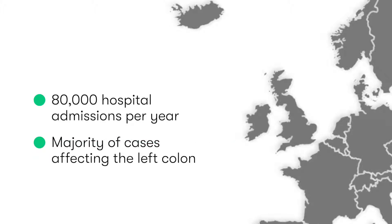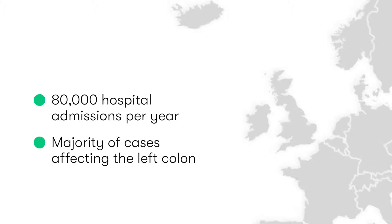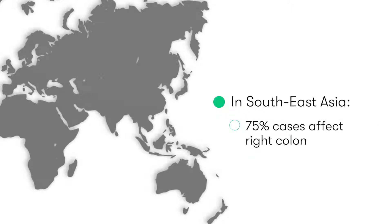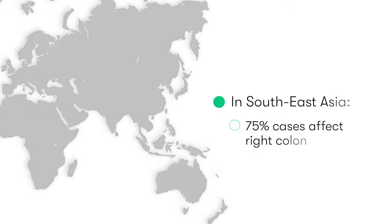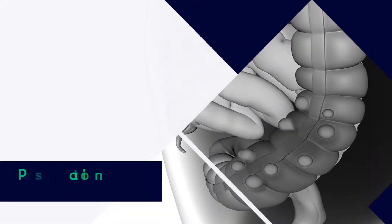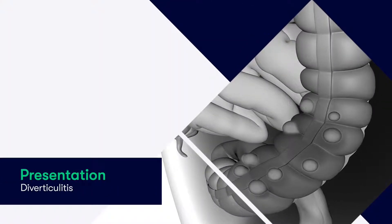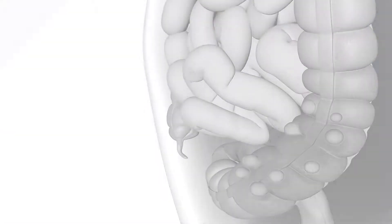The vast majority of cases involve diverticulitis of the left-sided colon. However, interestingly, in the Southeast Asian population, 75% of cases of diverticulitis occur in the right-sided colon. As to why this is the case, if anyone watching knows the answer, please get in touch and let us know.